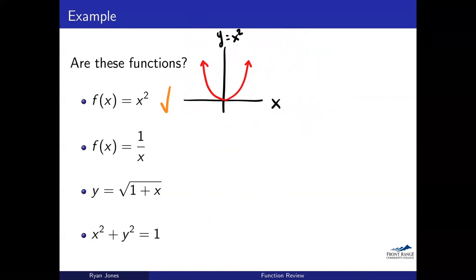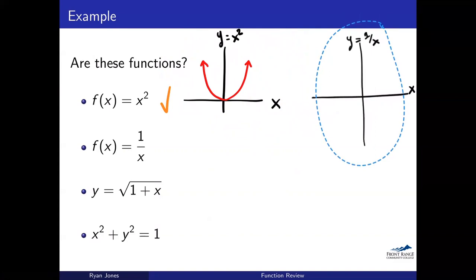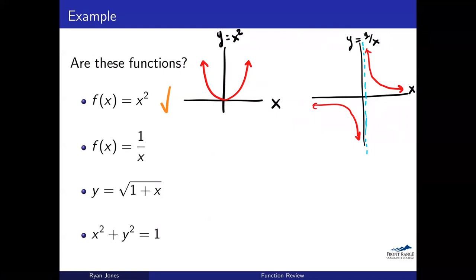Let me go ahead and graph 1/x. We remember it looks like this, with an asymptote at x equals 0. That asymptote can trip us up — it might seem like it's not a function, but that's actually about continuity, which we'll cover later in the course. This is a function because any x value you pick corresponds to just one y. It doesn't matter where x is — there's only one y for each.